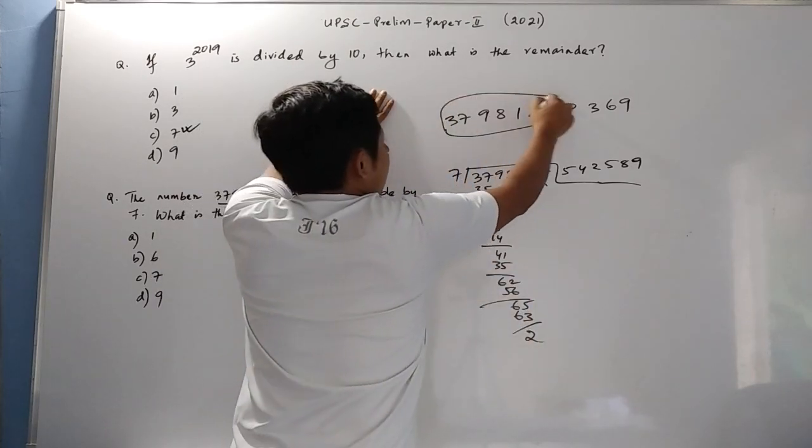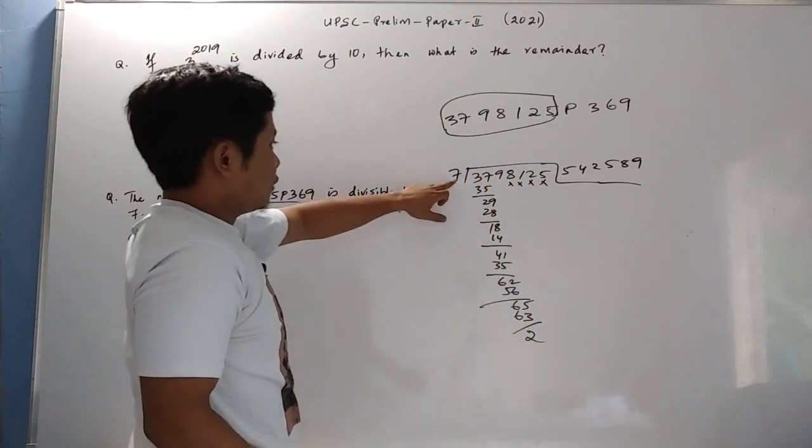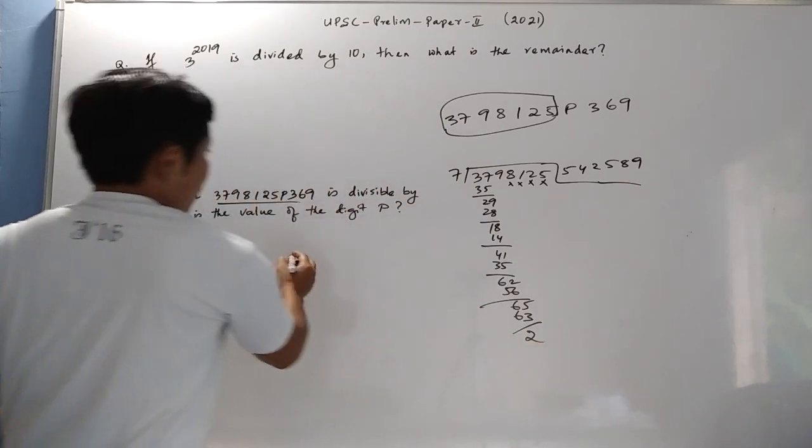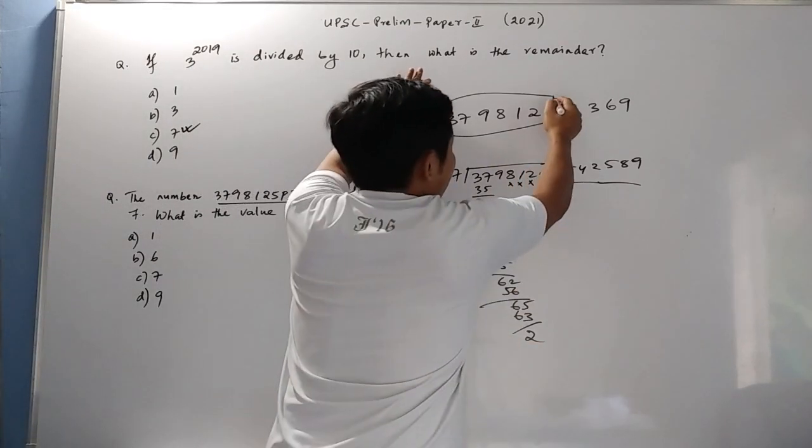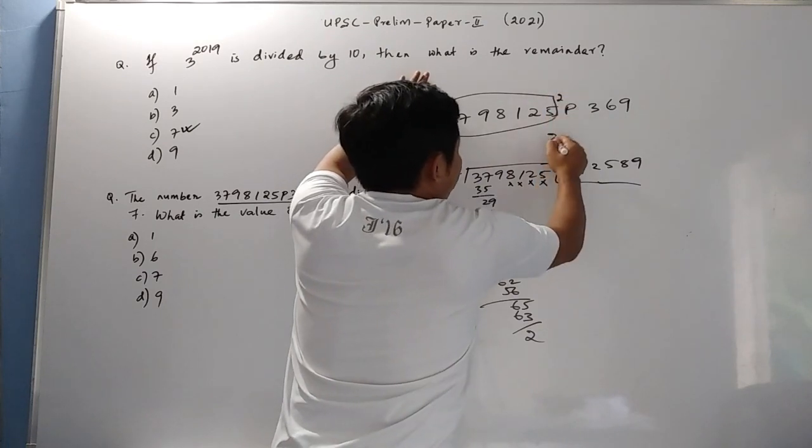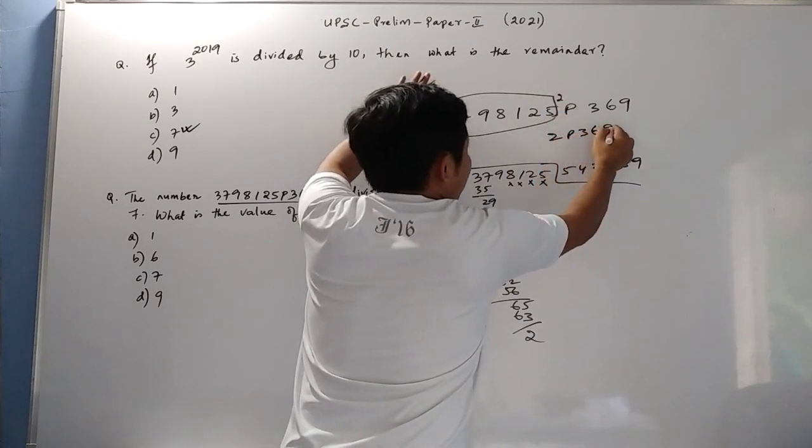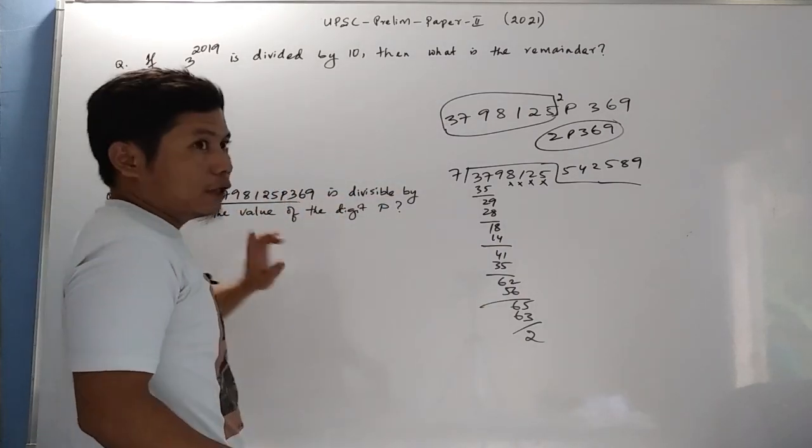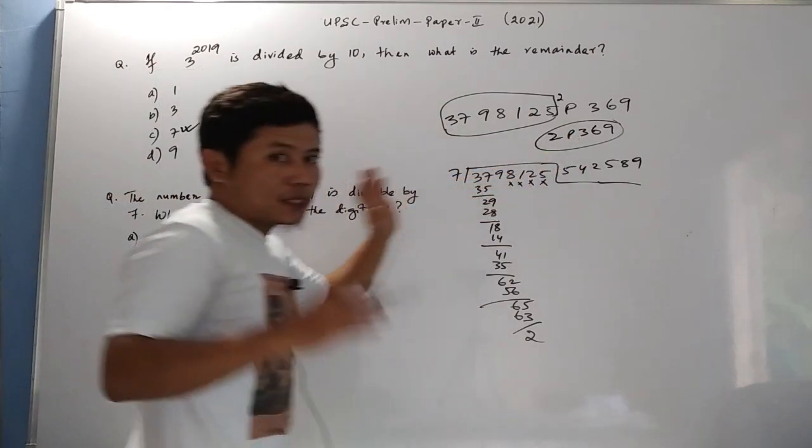So when we divide this whole thing by 7, it gives the remainder 2. That means for 2P369 to be divisible by 7, what will be the value of P? That is the same question. We are reducing it to a smaller number.